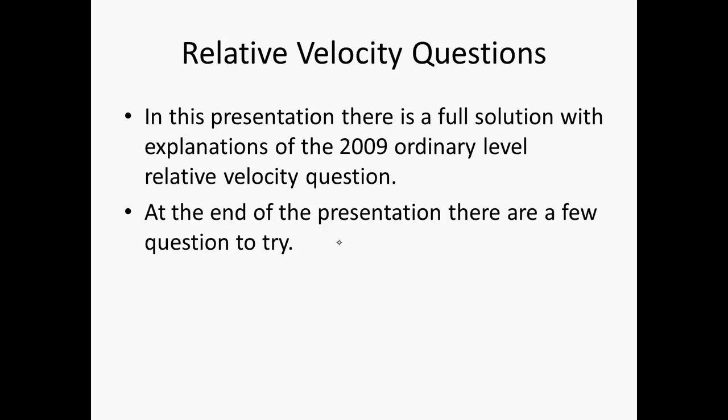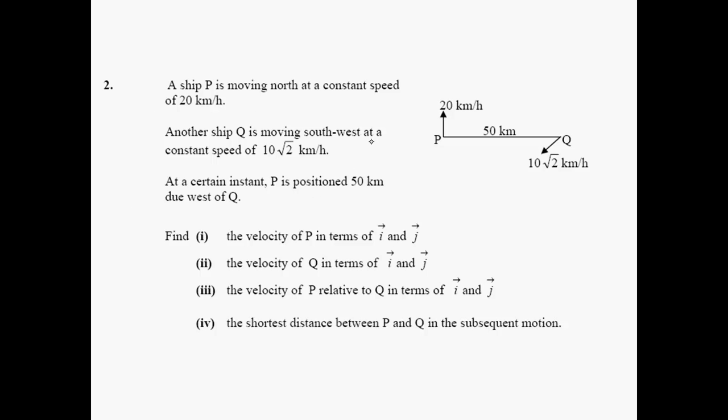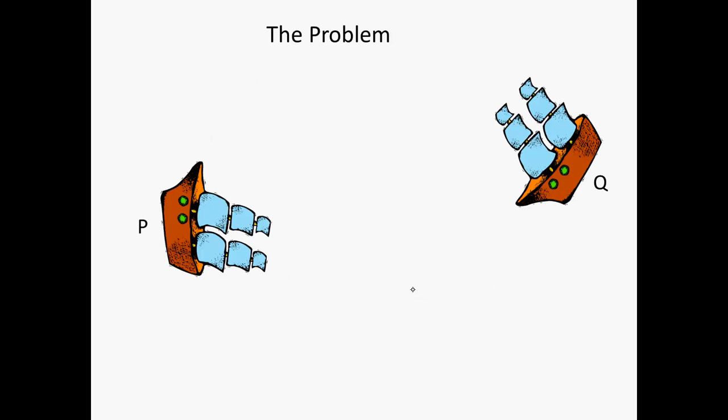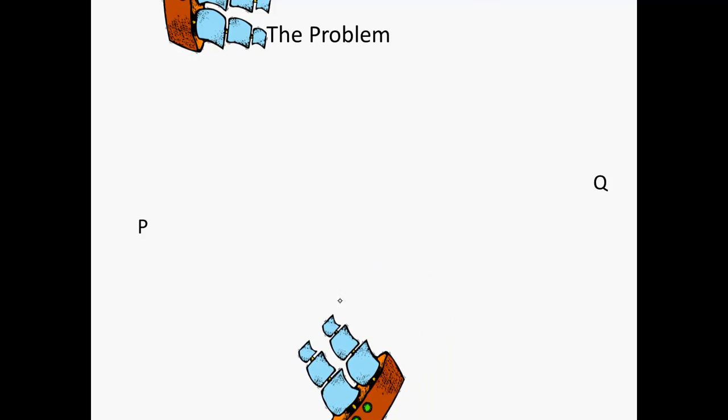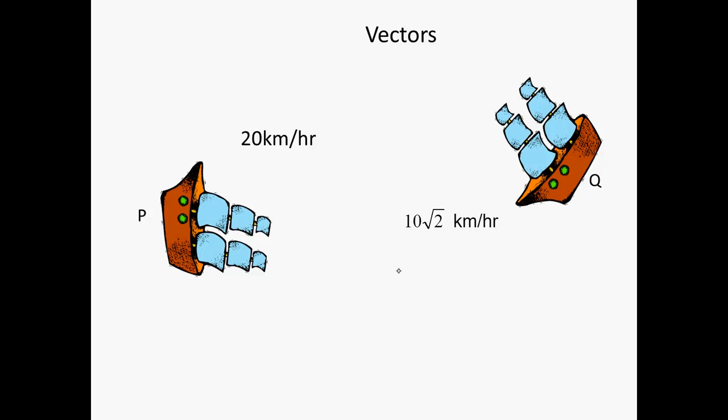And indeed, we've got an example of a question here, which is a relative velocity question with two ships, P and Q. One is moving north at 20 kilometers per hour. One is travelling south-west at 10 root 2 kilometers per hour. Now, the question asks us to find the velocity of P in terms of I and J, and the velocity of Q in terms of I and J. So this is roughly what's going on. P is moving up that way, and Q is going then that way.